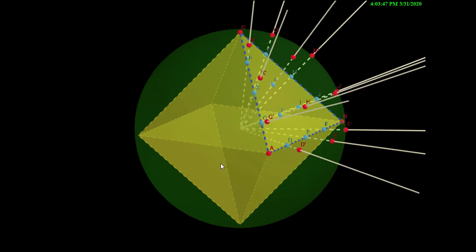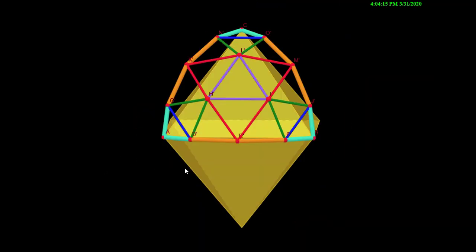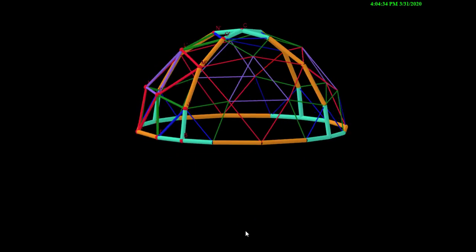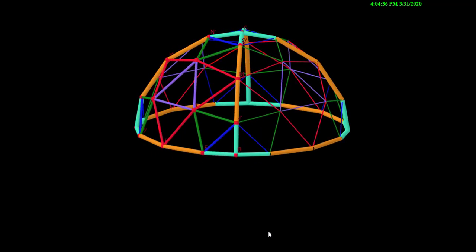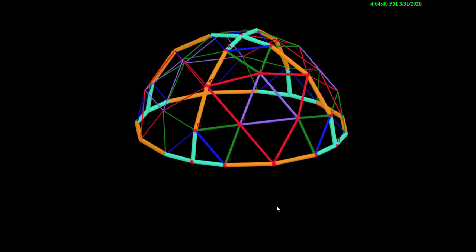Then we draw rays from the centre of the sphere through each of these points. These are projected onto the surface of the sphere to give the red points. These will be the vertices of the geodesic dome. We join these points with struts. Here we see a quarter of the dome. We build the rest in the same way. Struts with the same colour have the same length. You will notice most of the triangles are not equilateral, just close to being equilateral.